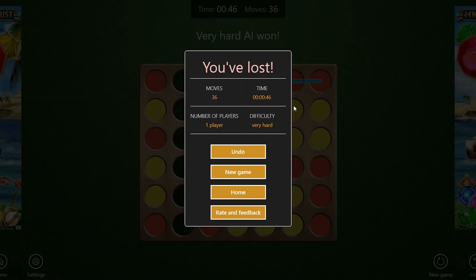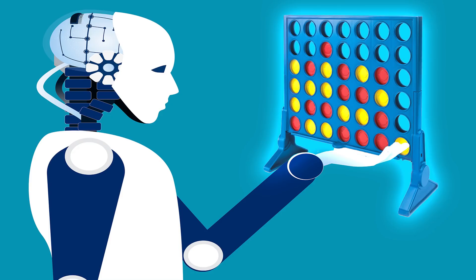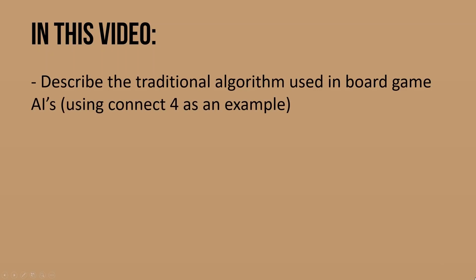Well, if you've ever been through one of these experiences, or maybe you're just curious about how a board game AI works in general, then this is the video for you. In this video, we're going to build up the intuition for and then describe the traditional algorithm used in board game AIs using Connect 4 as an example. And the reason I say traditional, I'll explain probably towards the end of the video.